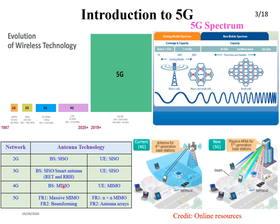The main disadvantage of traditional cell coverage is that you cover a large area even where no devices are present, wasting power. For example, if only four devices exist in a cell, the remaining coverage area and power are completely wasted. That's why 5G introduces beamforming technology.